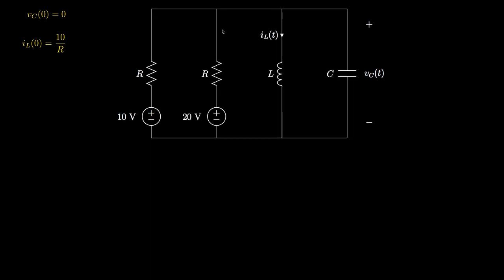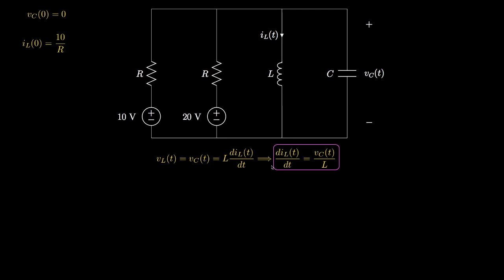When we connect the switch, we'll add the 20-volt source along with its resistance into the circuit. Because the inductor and capacitor are in parallel, the voltage across these elements is equal. And because the voltage across an inductor equals the inductance times the derivative of the current through the inductor, the derivative of the inductor current equals the capacitor voltage divided by the inductance. So the derivative of the inductor current at t equals 0 is the capacitor voltage at t equals 0 divided by the inductance, which is 0 divided by L, giving us 0.